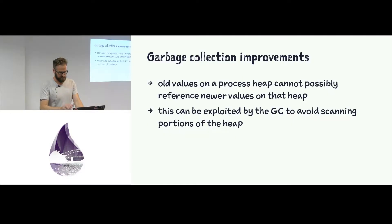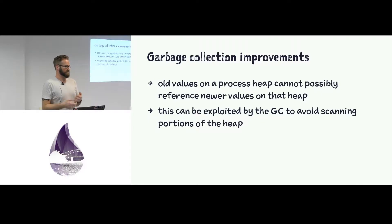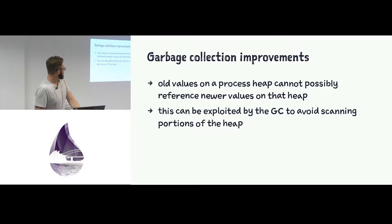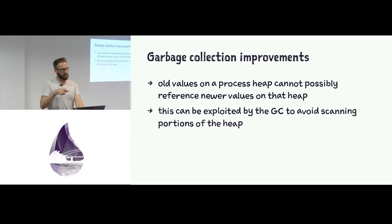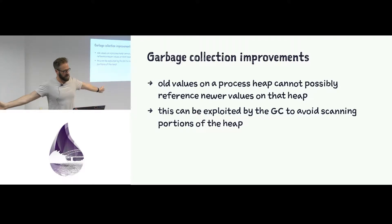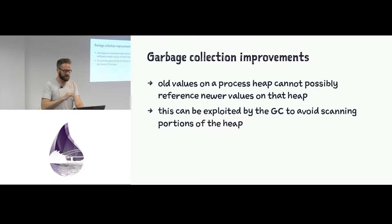How does BEAM exploit immutability? This is where the talk goes on a tangent. We know why immutability is good as developers — it makes code easier to reason about. But it also means BEAM itself can make a whole bunch of optimizations. For example, the garbage collector can take advantage of the fact that old values on a process heap cannot possibly reference newer values on that heap, because you can't go back in time and change a value to point to something that didn't exist when it was created. So you can safely ignore whole parts of the heap when traversing your graph to work out what to destroy.